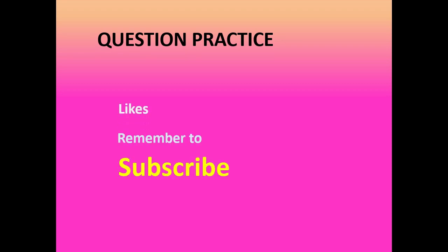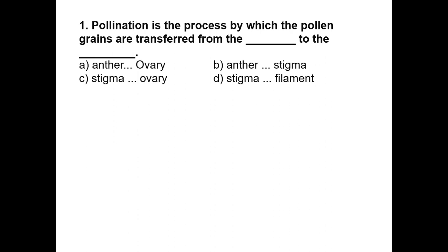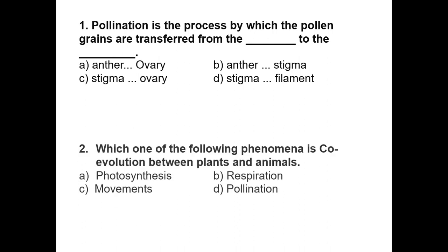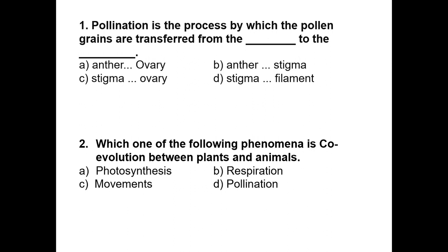Question practice. Question 1: Pollination is the process by which the pollen grains are transferred from the ___ to the ___. Option a: anther to ovary. Option b: anther to stigma. Option c: stigma to ovary. Option d: stigma to phlegma. Question 2: Which of the following phenomena is responsible for co-evolution between plants and animals? Option a: Photosynthesis. Option b: Respiration. Option c: Movements. Option d: Pollination.